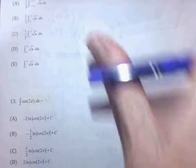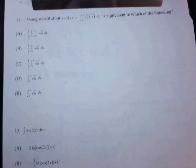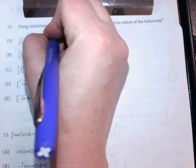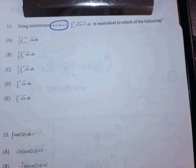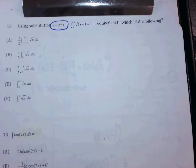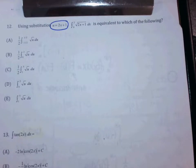This one is asking you to rewrite the integral. Give that one a shot — what should you pick as your U? Oh, it even tells you! They're so nice. Using U equals 2x plus 1, which integral is equivalent? All of these answers are already rewritten. You just have to rewrite it.